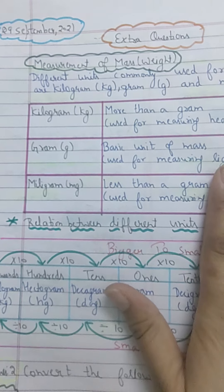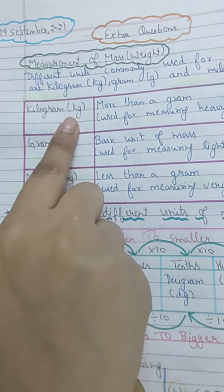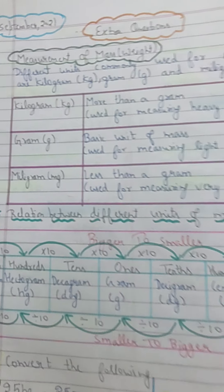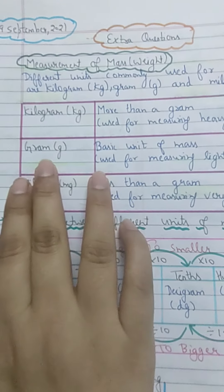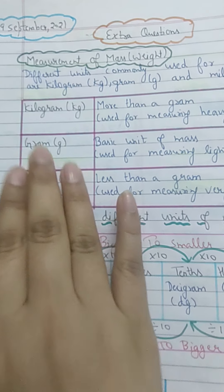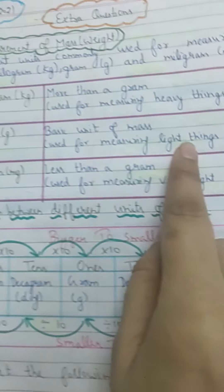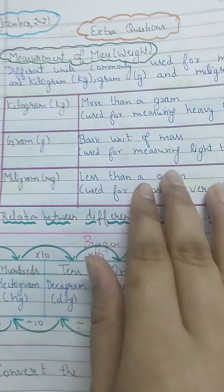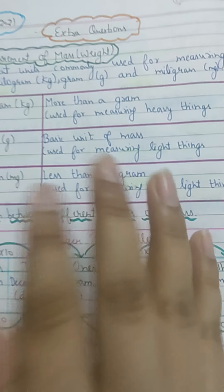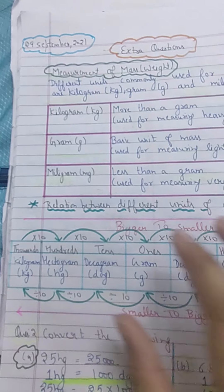The measuring units for weight and mass are kilogram, gram, and milligram. Kilogram is the biggest unit of mass and is used for measuring heavy things. Gram is the basic or standard unit of weight or mass, used for measuring light things. Milligram is less than gram and is used for measuring very light things.